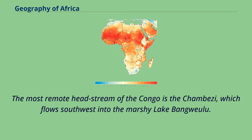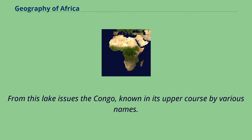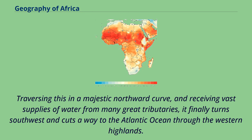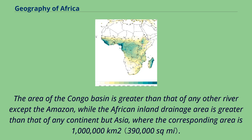The most remote headstream of the Congo is the Chambezi, which flows southwest into the marshy Lake Bangweulu. From this lake issues the Congo, known in its upper course by various names. Flowing first south, it afterwards turns north through Lake Mweru and descends to the forest-clad basin of West Equatorial Africa. Traversing this in a majestic northward curve and receiving vast supplies of water from many great tributaries, it finally turns southwest and cuts away to the Atlantic Ocean through the western highlands. The area of the Congo basin is greater than that of any other river except the Amazon.